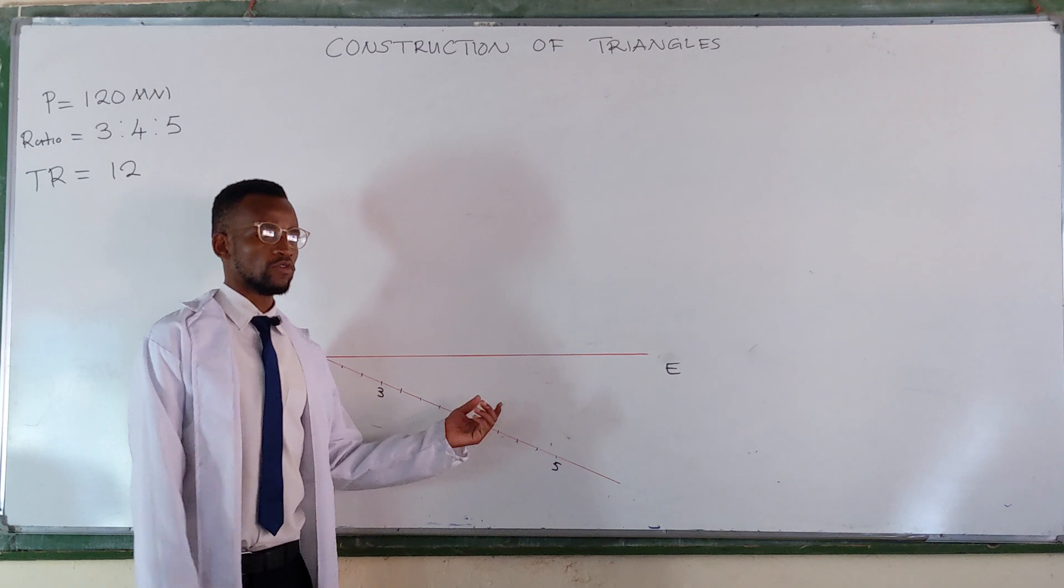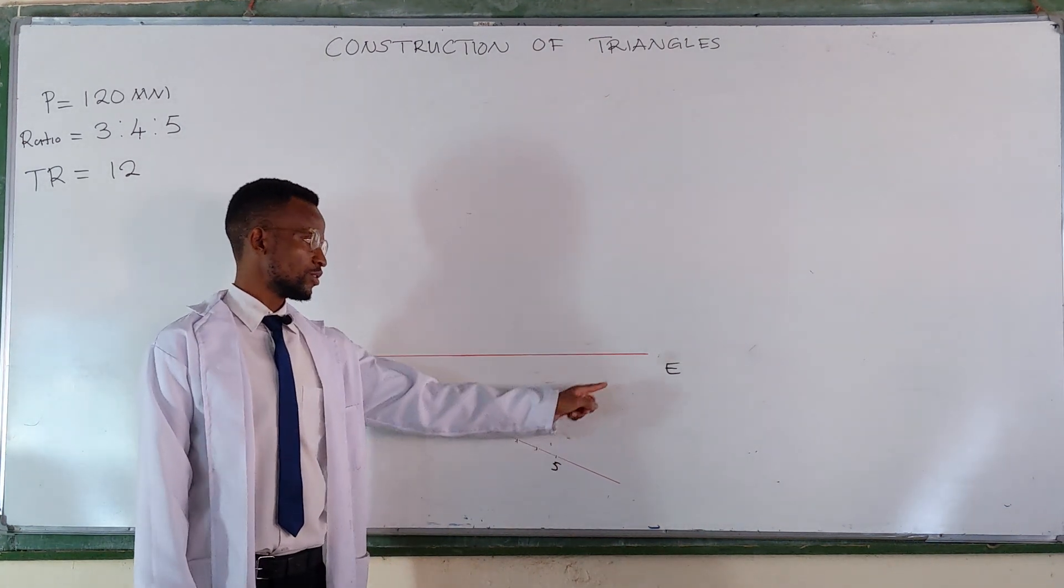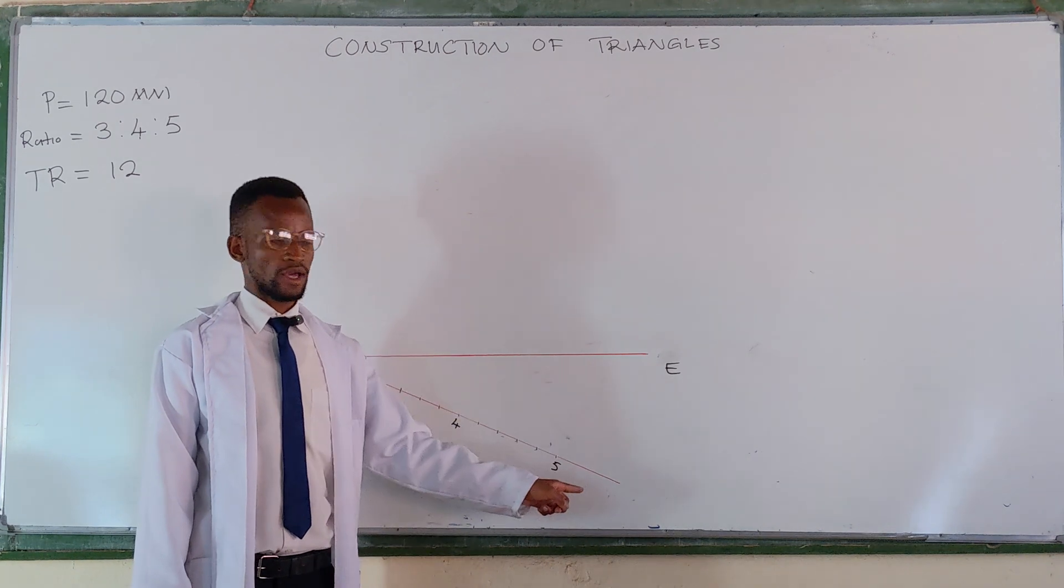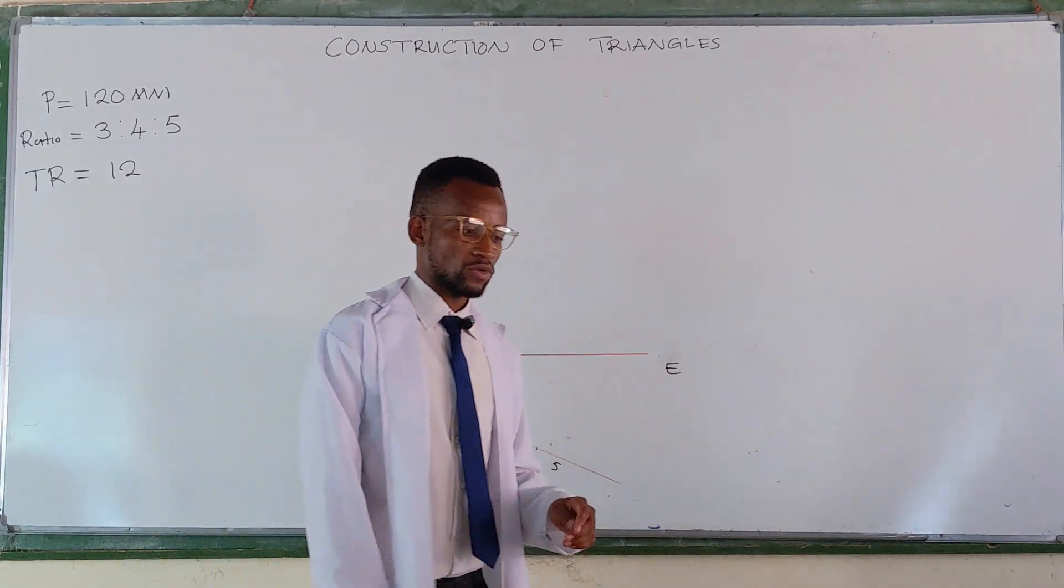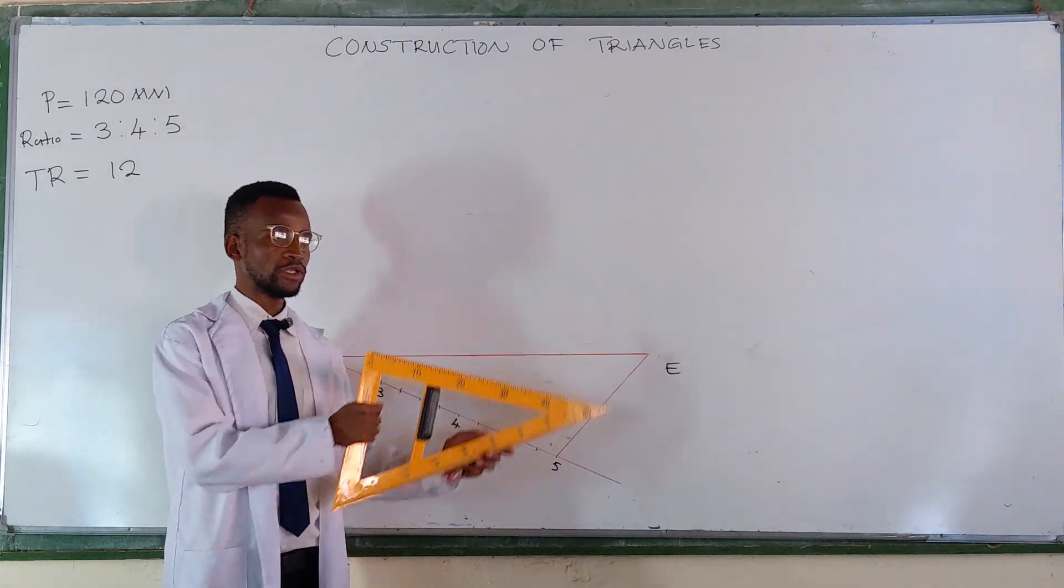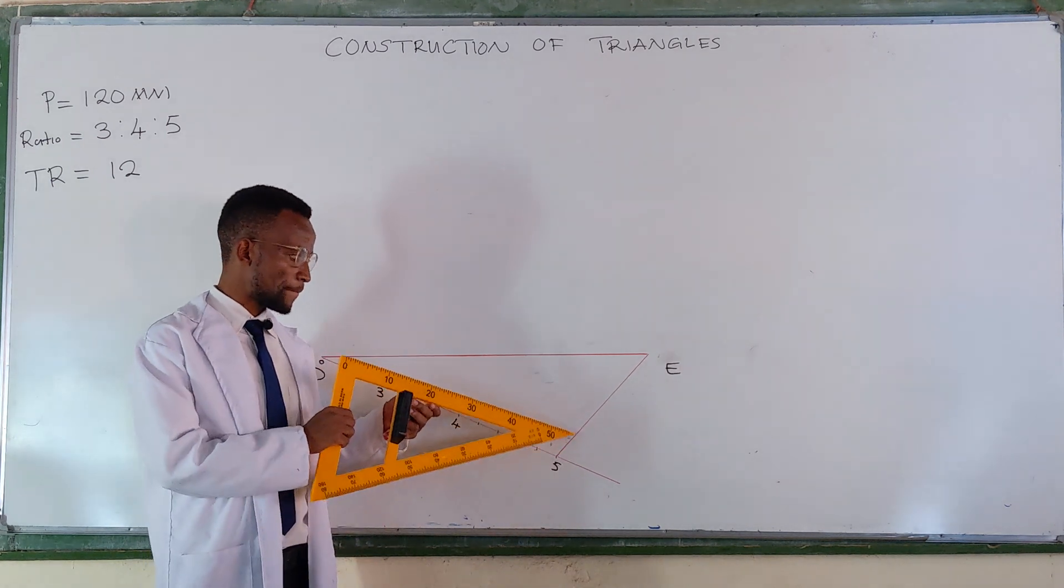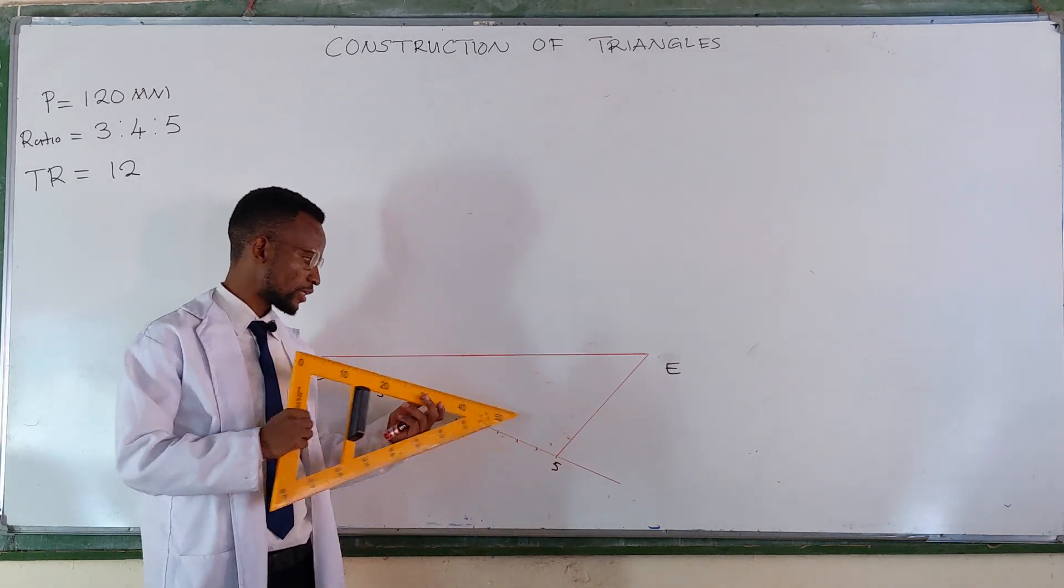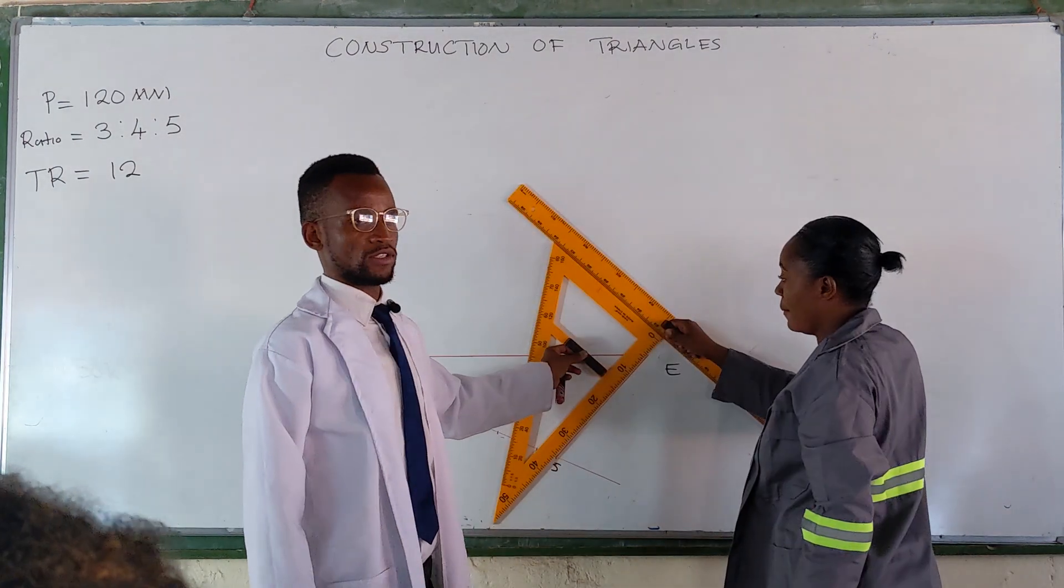So now for us to divide this line into the given ratio, we close this point and that point with a straight line. After connecting this point to that point with this red line, you draw a parallel line to this line at point four and at point three. Have you seen what is happening here?